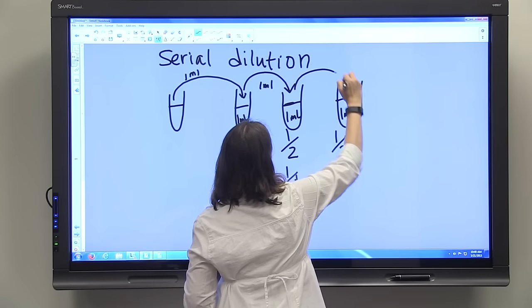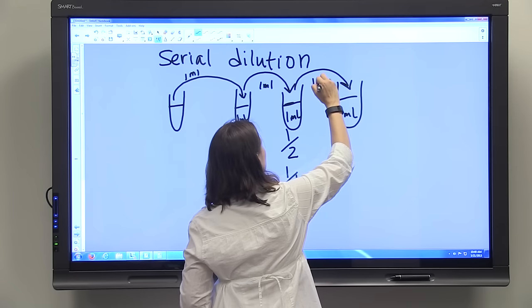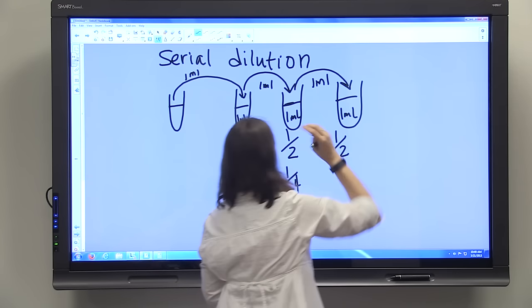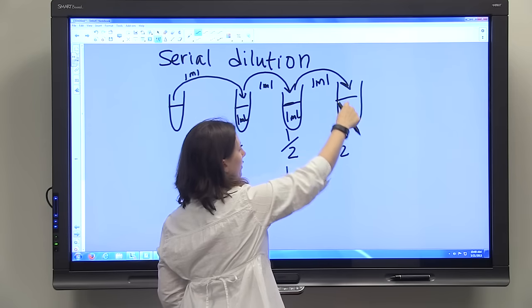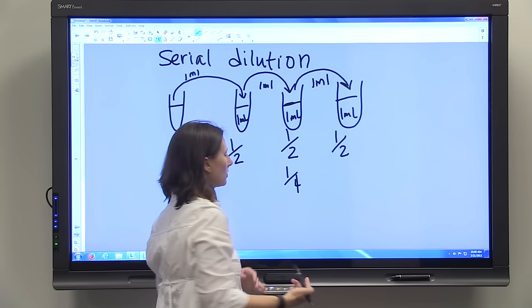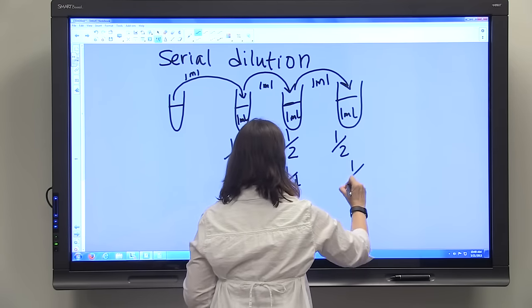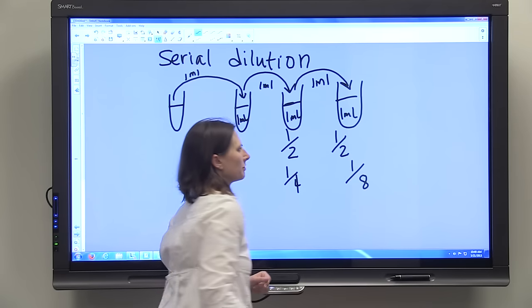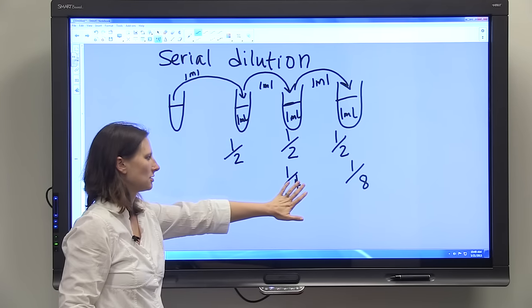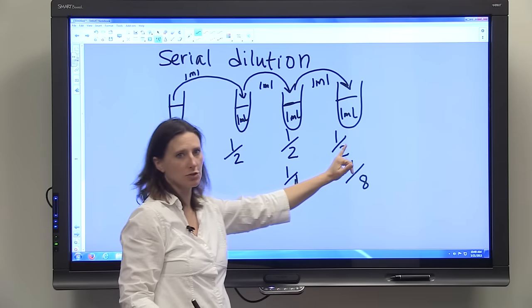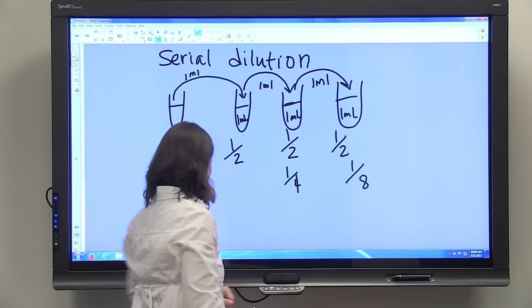Same here if we take another ml. We have to make sure we're mixing these well before we're transferring that 1 ml so that we know the concentration. But here we're going to have an eighth because this concentration is diluted by 1 half to give us 1 eighth.